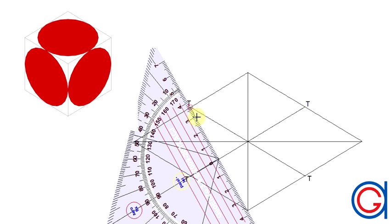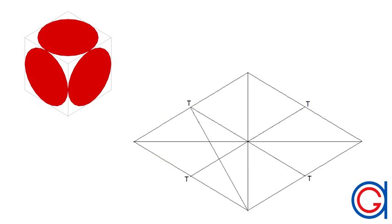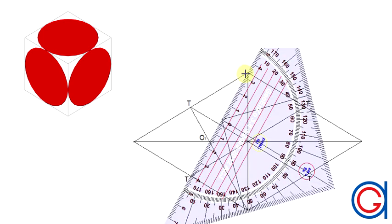The next step I am going to join the top left tangent to the bottom vertex of the rhombus. This line cuts our horizontal diagonal at O1 which will be the first center of the oval.